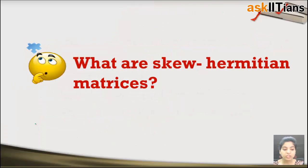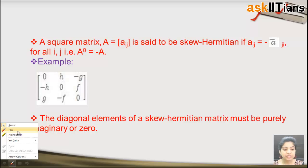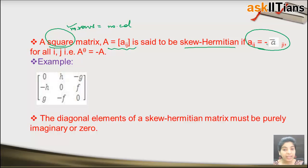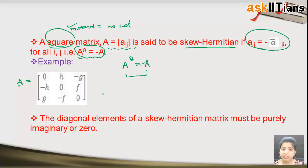Next we have the skew Hermitian matrix. Just as we had symmetric and skew symmetric, we have Hermitian and skew Hermitian. The definition says: a square matrix A = [a_ij] is said to be skew Hermitian if a_ij equals the negative of the conjugate of a_ji, that is A^θ equals −A. You calculate A^θ and it comes out to be the negative of A.